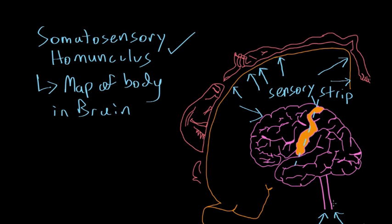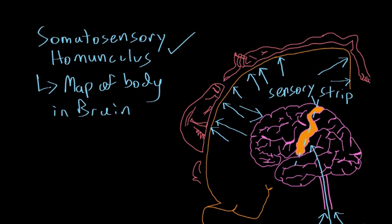Basically, information from various parts of the body comes into the brain, hits the sensory strip, and it will always go to one specific part of that sensory strip. For example, this is where the face maps — so information from the lips would come right here, and information from the eyes would go over here. The sensory strip always receives information from different parts of the body, and that information will always go to one consistent part of the sensory strip.